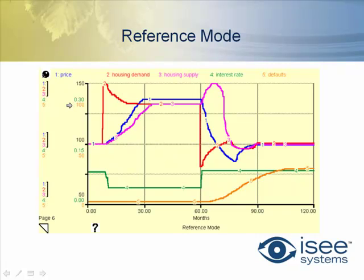We're exploring the hypothesis that lowering interest rates increases housing prices, because people can afford more when monthly payments go down. And then the effect of increasing interest rates later would make it harder for people to continue paying their mortgages, particularly variable rate mortgages. At the beginning, the interest rate is dropped by the Federal Reserve, demand goes up, price starts to climb, supply starts to climb, and at some later point the interest rate is raised again and demand drops.